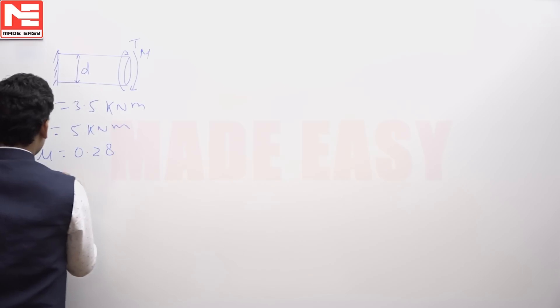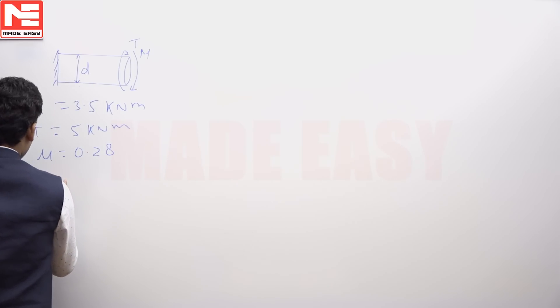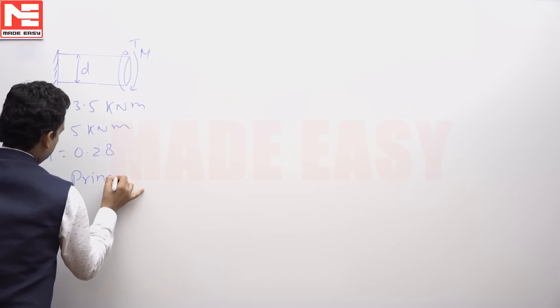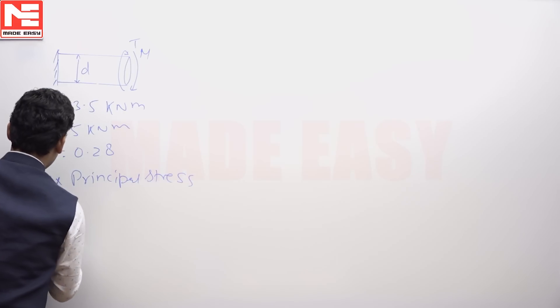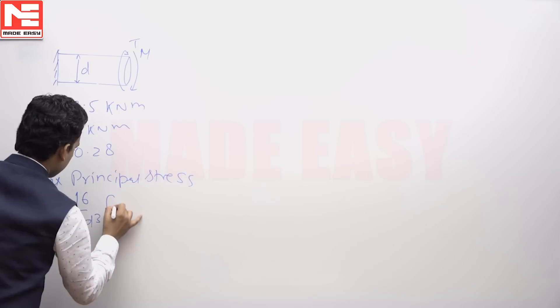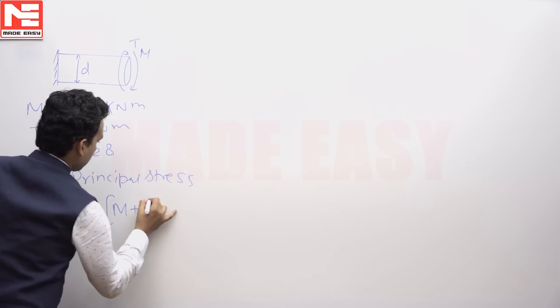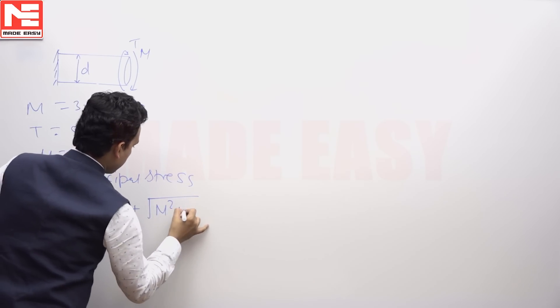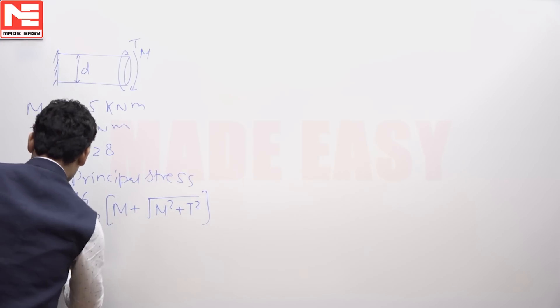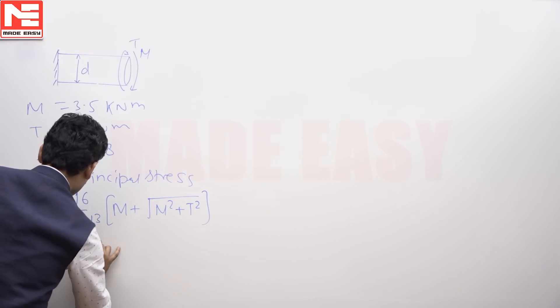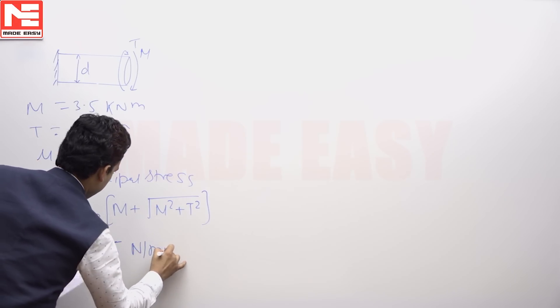To find the maximum principal stress sigma 1, use the formula: σ₁ = (16/πd³)(M + √(M² + T²)). Since you have all the values, after calculating we get 95.5 N/mm².